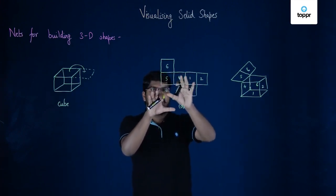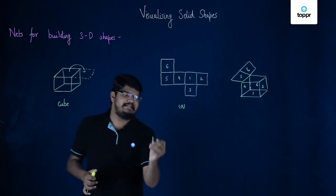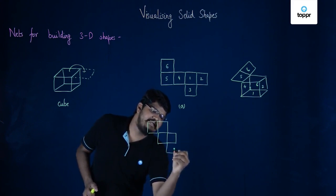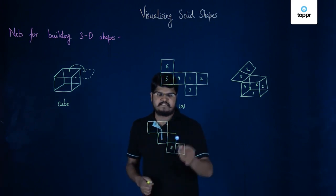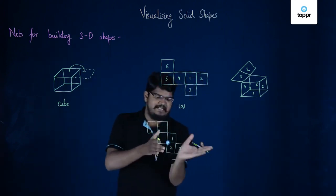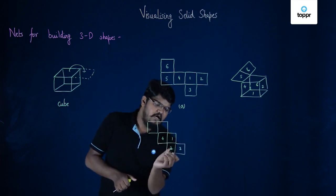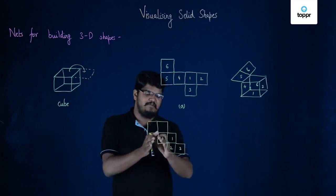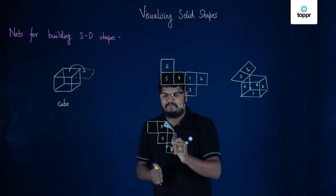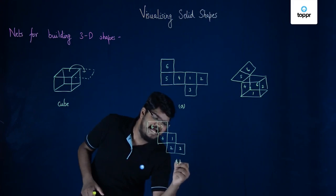This is just one type of net. You can also have a net diagram which looks different and it will also form a cube. If you take this one as your base, then wrapping over: this square will become the side face, this square will become the opposite side face. Face 2 will become the front face, face 3 the side face, face 4 the other side face. Then this one will become the back face and this right here will become the top face. Upon folding, if you get a perfect cube, then that particular net diagram is a net diagram of a cube.